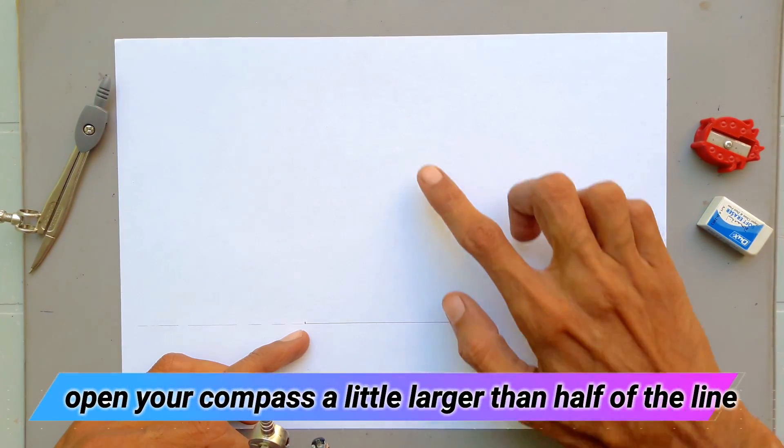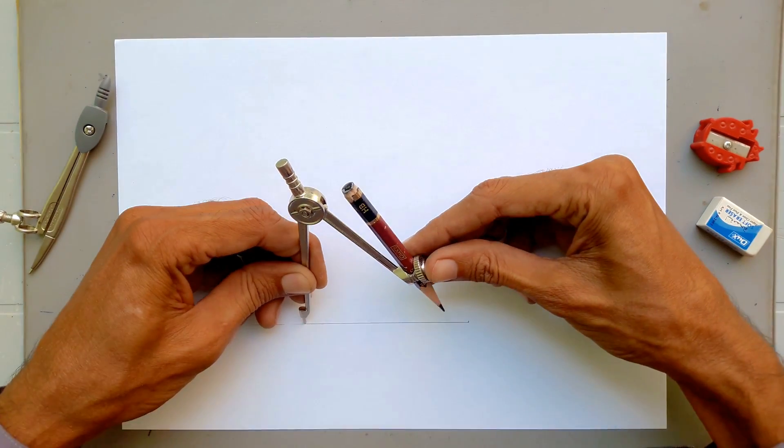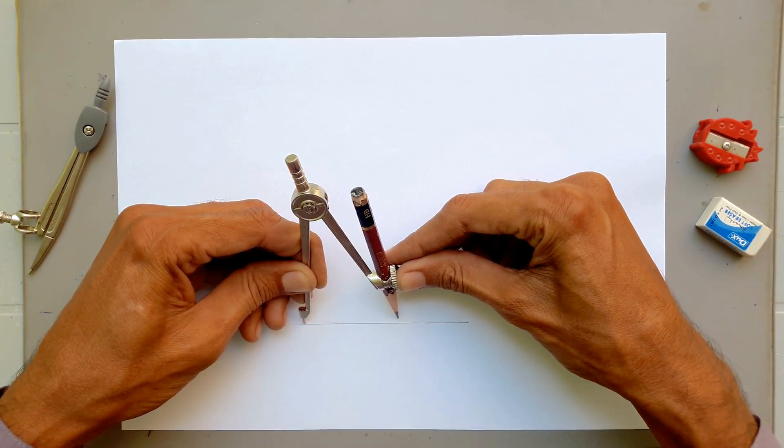Now we have to draw a perpendicular at the middle of the line, so open your compass a little larger than half of the line and draw arcs like this.